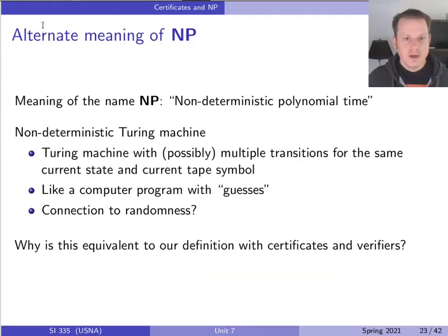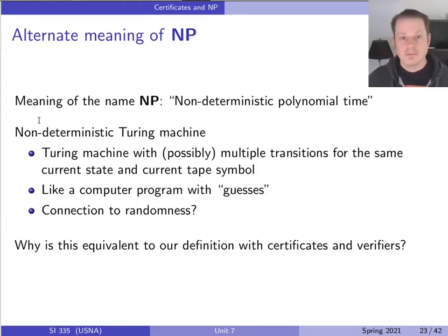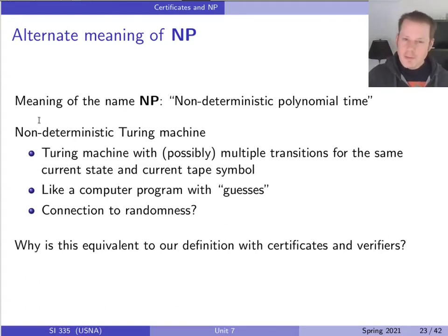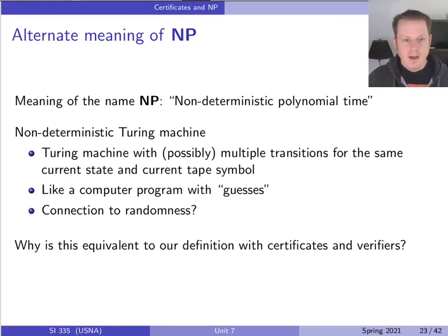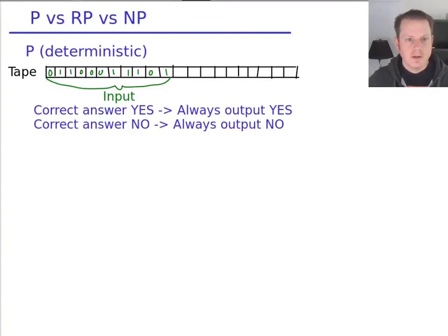The real meaning of the name NP is non-deterministic polynomial time — applying a non-deterministic label to a Turing machine. Polynomial time technically means anything solvable in polynomial time by a Turing machine. NP means something solvable in polynomial time by a non-deterministic Turing machine. Remember the difference from theory class between DFAs and NDFAs: in a non-deterministic finite automaton you can have multiple transitions with the same symbol, creating multiple paths, and you ask whether any path leads to an accepting state.